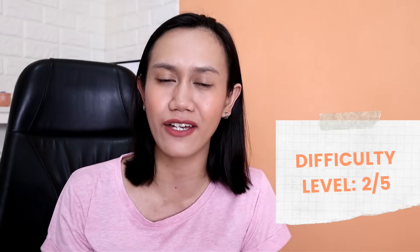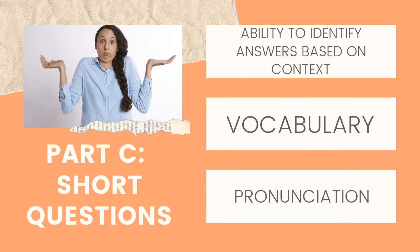Part C is answering close-ended questions. If you're not familiar with close-ended questions, these are questions that have definite answers like yes or no, one-liners, or exact answers. The difficulty level is 2 out of 5. These are common-sense-based questions and you just have to give one-word correct answers. Some questions have options, some don't, so you have to be quick when answering. This part measures your ability to identify answers based on context, as well as your receptive and productive vocabulary within a conversational style. Even if your answer is wrong, it won't usually matter — but do not intentionally answer incorrectly.